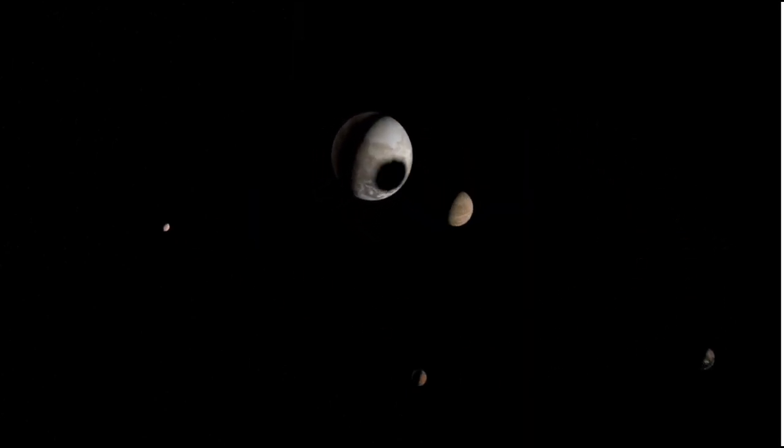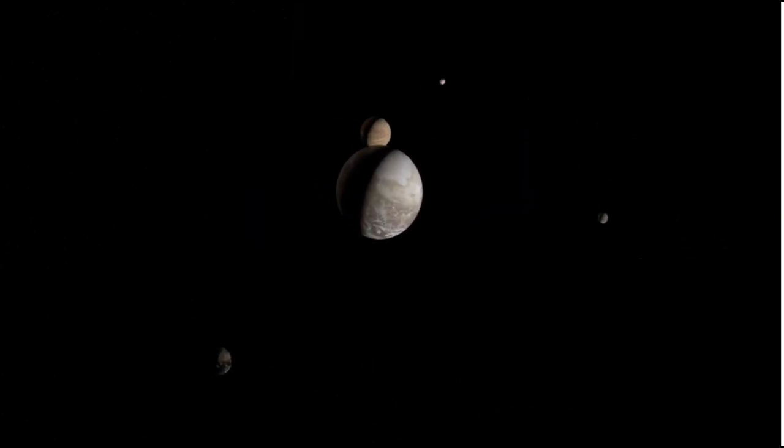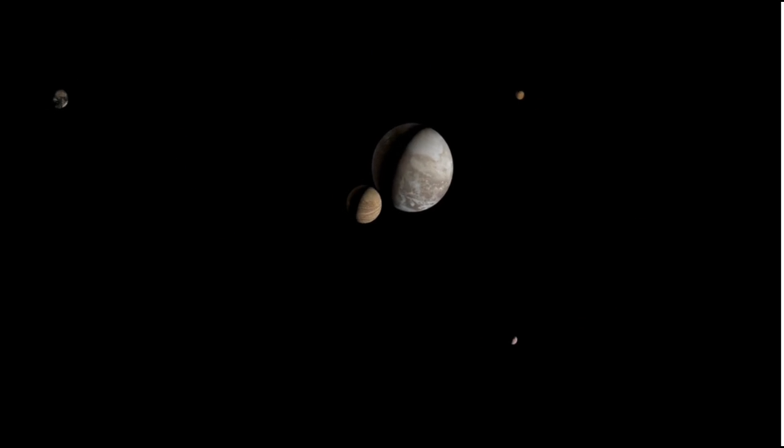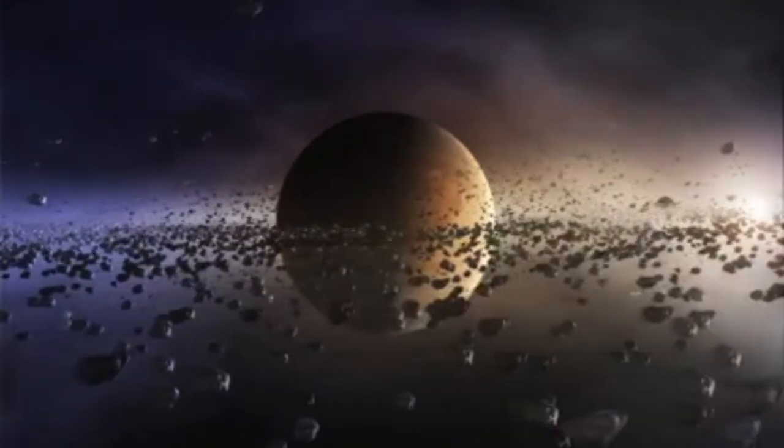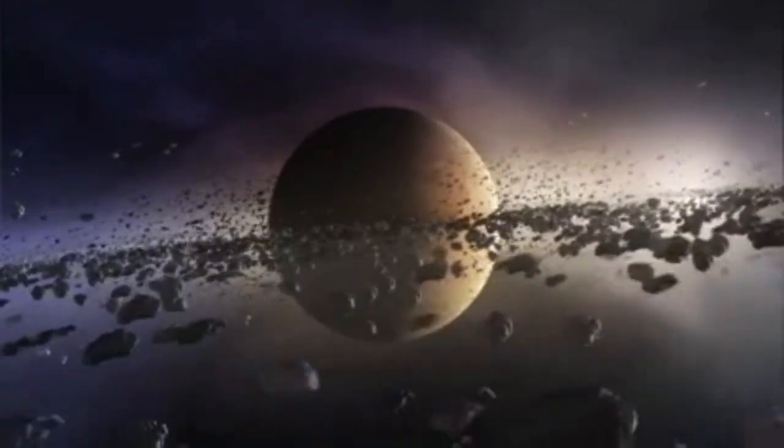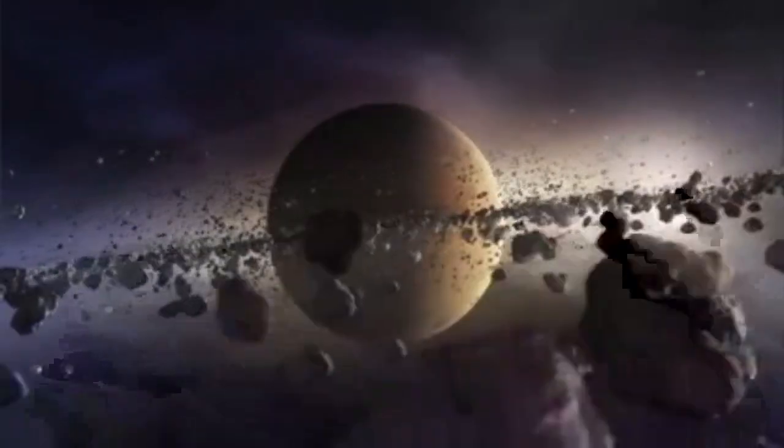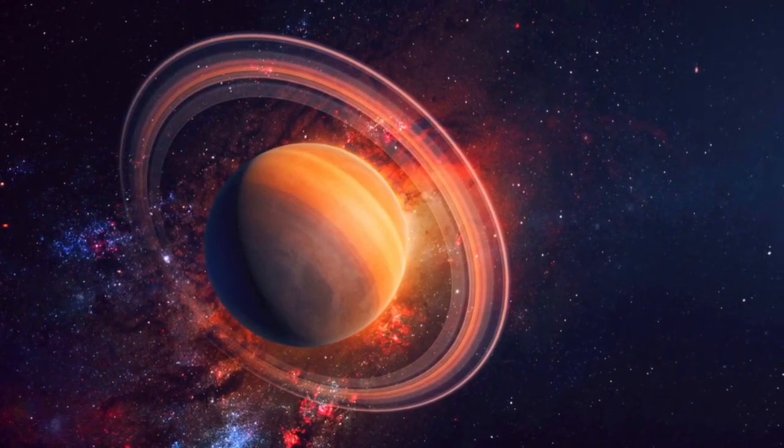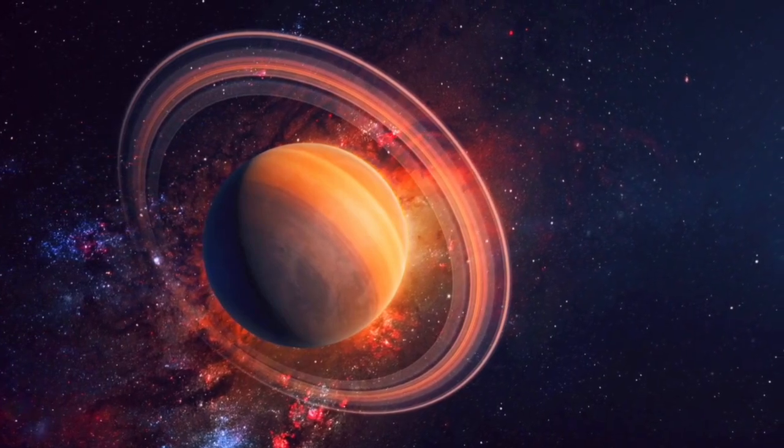Yet the category of exoplanets includes more than just giants. Neptune-like planets, termed Neptunians, exist in both small and hot forms. These are compact, cloud-shrouded worlds, often nestled close to their host stars, presenting unique challenges to scientists.